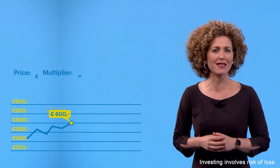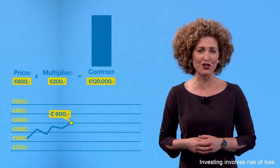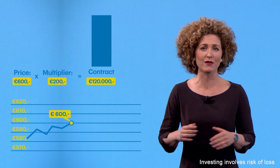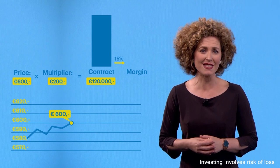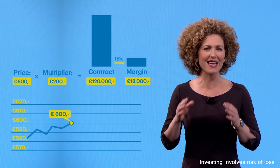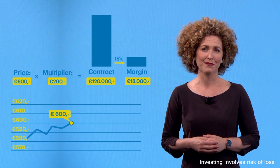Say you think a stock index will go up. It is currently priced at 600 euros, and you consider a future contract with a 200 euros multiplier. The whole value of this future contract would be 120,000 euros. When trading futures, you do not need to buy the whole amount, but typically put down an initial margin to enter into the contract. Say there is a margin rate of 15%. You would get 120,000 euros exposure to the underlying by making a deposit of at least 18,000 euros as margin to your account. So with the future contract, you can get a large exposure for a small initial margin.